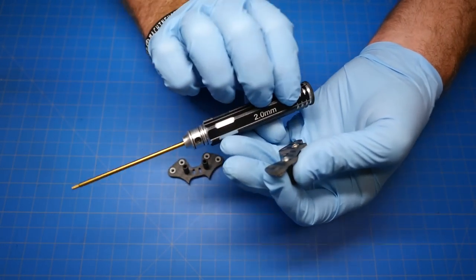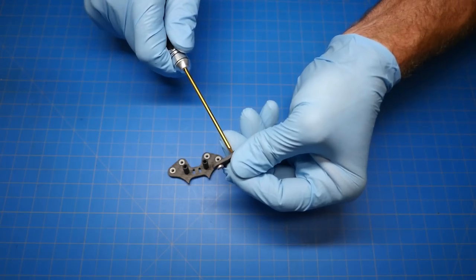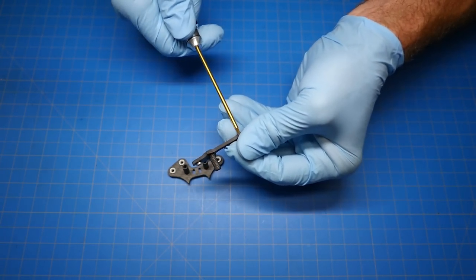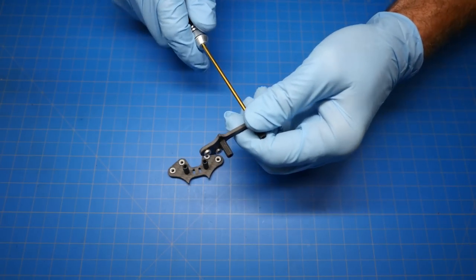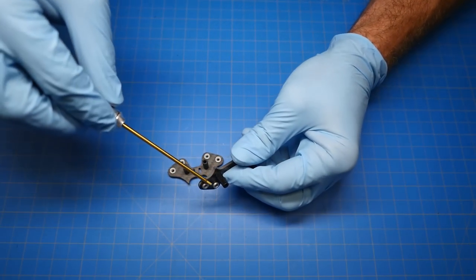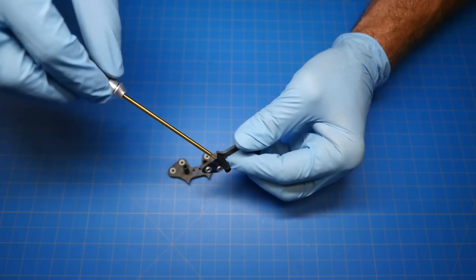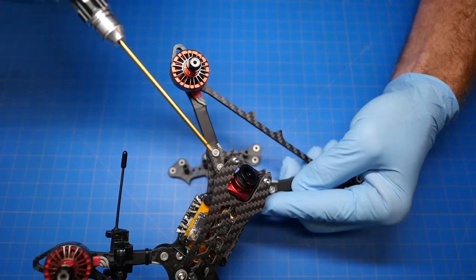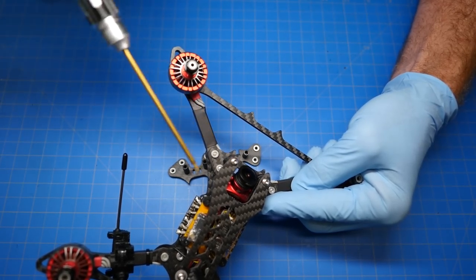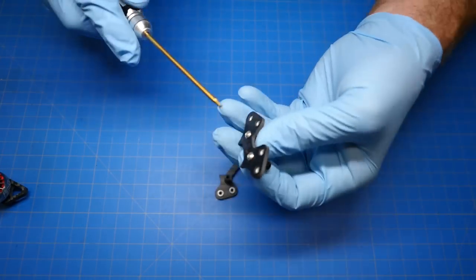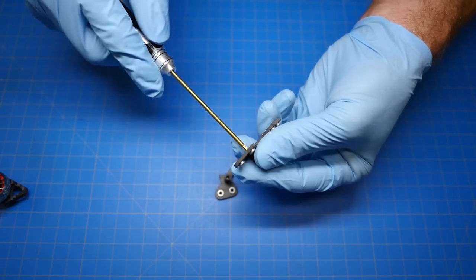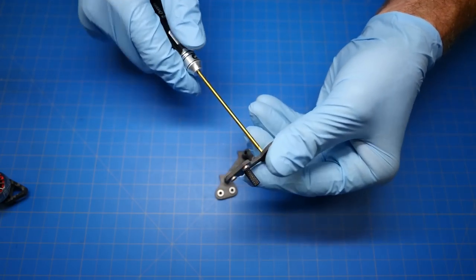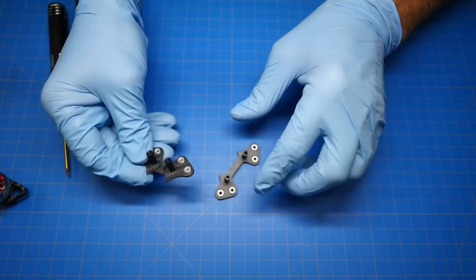I'm going to take a two millimeter driver and crank these down a bit. When you try and tighten these up, it may start to spin this standoff, but don't worry about that. Just get it nice, as tight as you can, and then once you go back and start putting in this screw, you'll be able to tighten it all the way. You can go back underneath and finish tightening these screws.